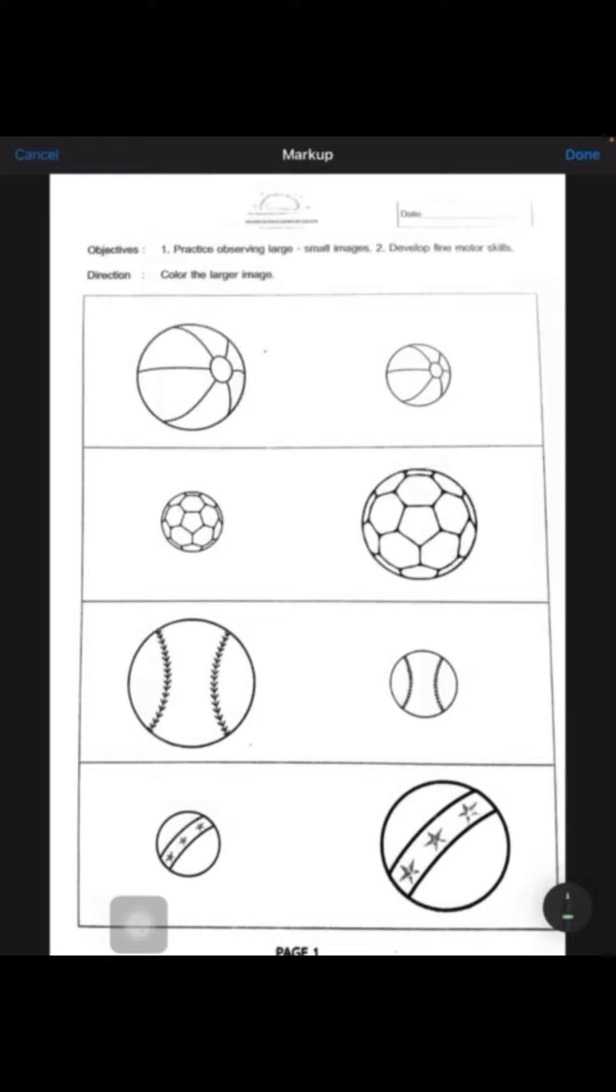Please color the larger image. Here we have two balls, one on the left and one on the right. The one on the left is a large ball - large means big ball. The ball on the right is a small ball.